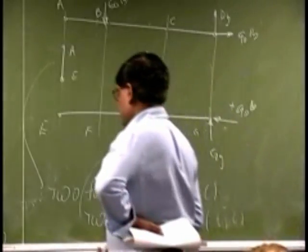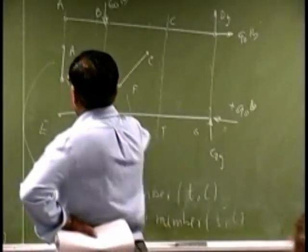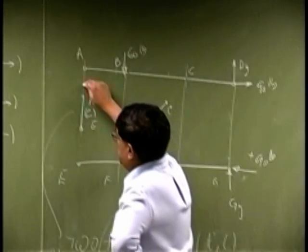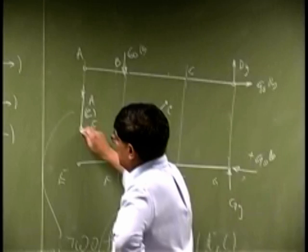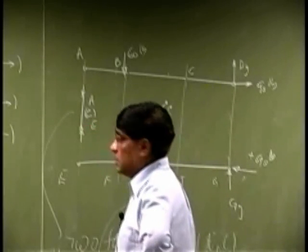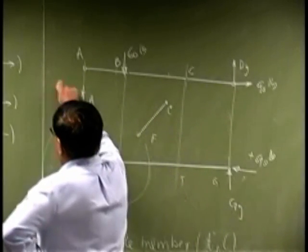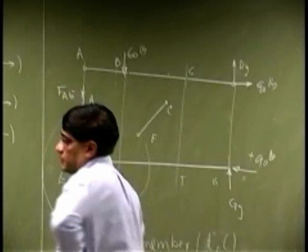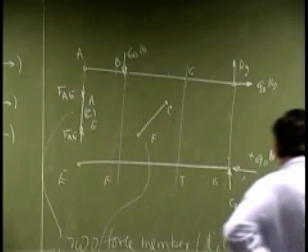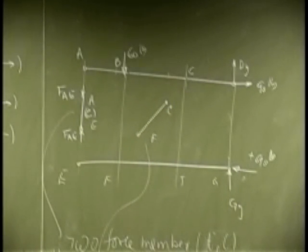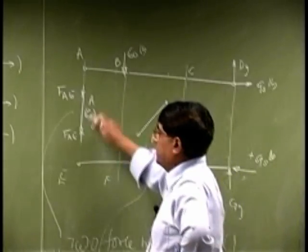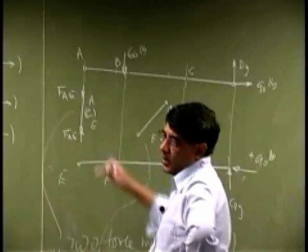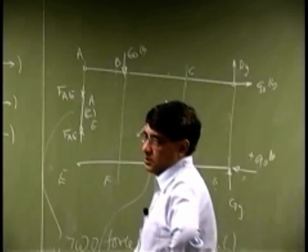So let us make some assumptions and let us make an assumption here that this is going to be compression. Now if it is a compression, then the force in member is going to go like this and let us call that as F_AE and F_AE. So what we did was we assumed this to be in compression. Then the unknown member force is going to be F_AE and these are the two directions.